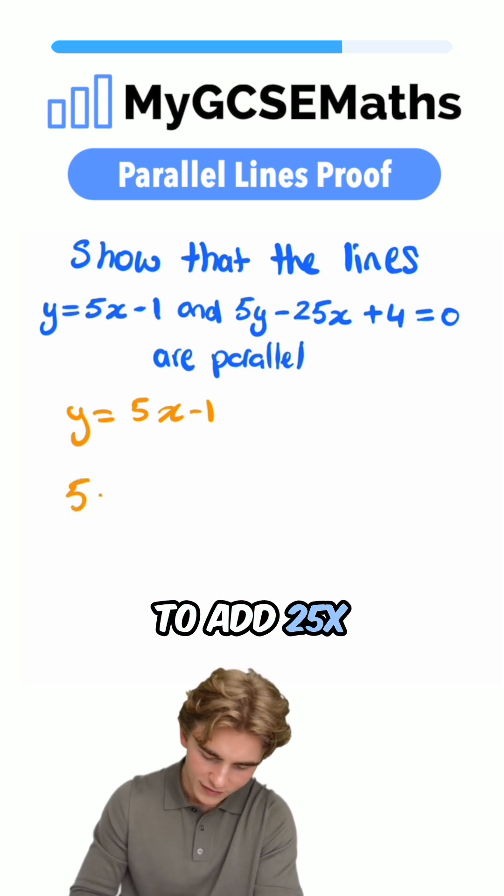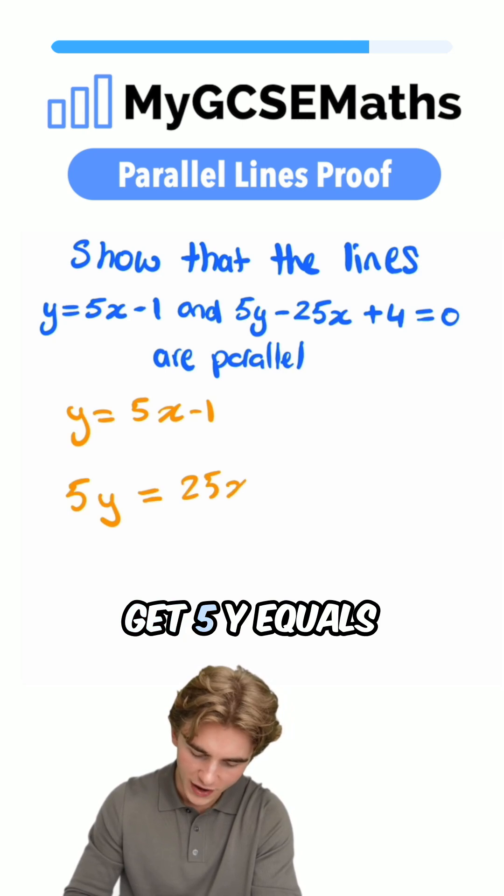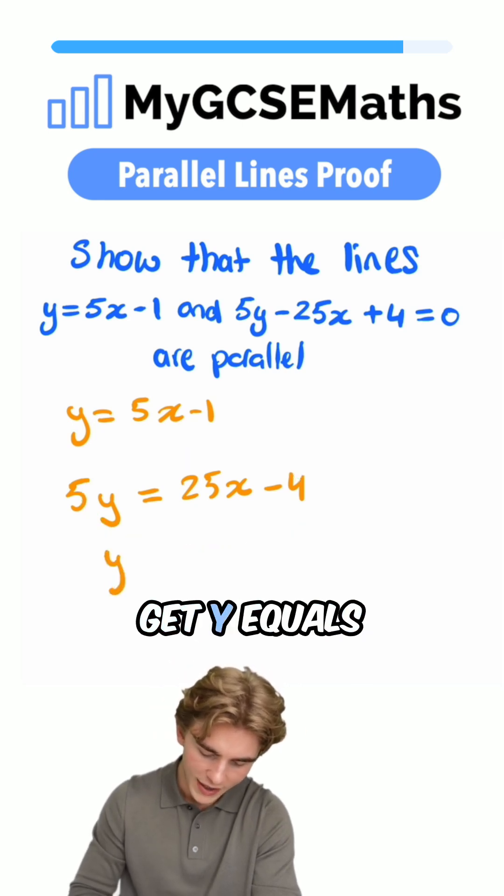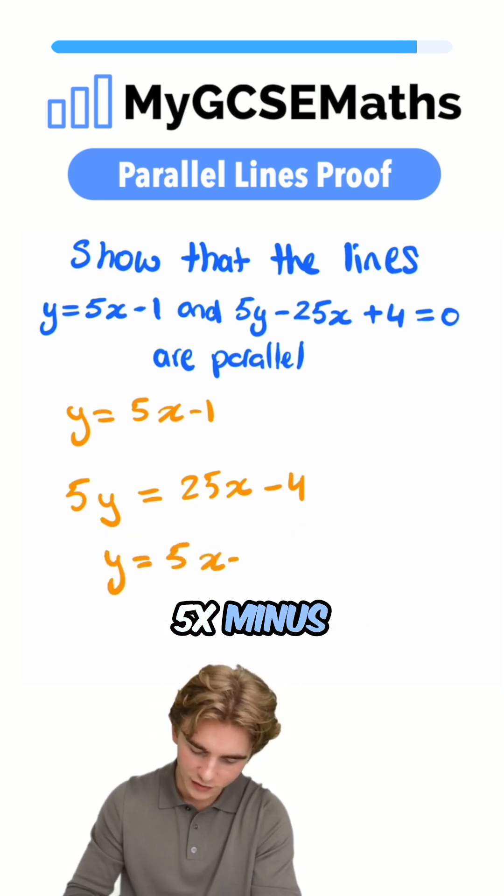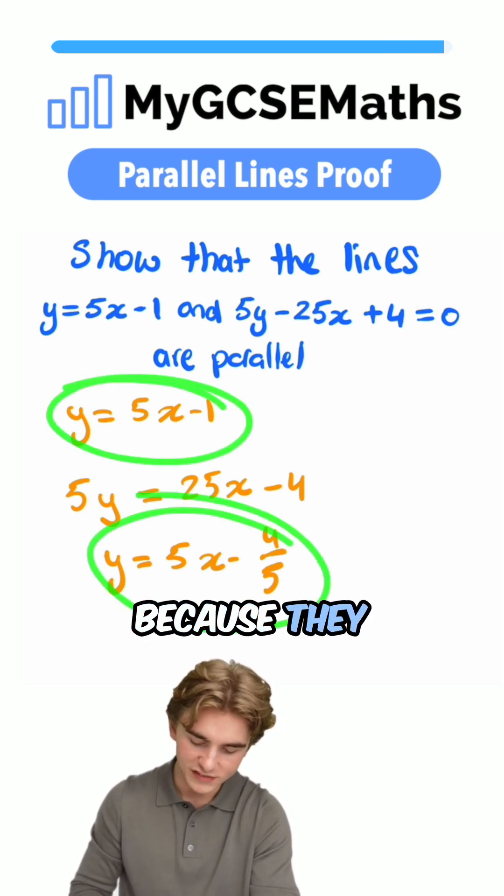So we're going to add 25x and subtract 4 from both sides. We're going to get 5y equals 25x minus 4. Now, we can divide both sides by 5. We're going to get y equals 5x minus 4 over 5. Now, we've shown that these two lines are parallel because they have the same gradient.